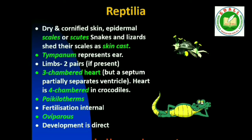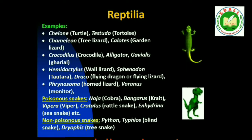Class Reptilia: The class name refers to their creeping or crawling mode of locomotion (Latin: repo/reptum = to creep or crawl). They are mostly terrestrial animals and their body is covered by dry and cornified skin — epidermal scales or scutes. They do not have external ear openings; tympanum represents the ear. Limbs, when present, are two pairs. Heart is usually three-chambered, but four-chambered in crocodiles. Reptiles are poikilotherms. Snakes and lizards shed their scales as skin cast. Sexes are separate; fertilization is internal. They are oviparous and development is direct. Examples: Chelone (turtle), Testudo (tortoise), Chameleon (tree lizard), Calotes (garden lizard), Crocodilus (crocodile), Alligator, Hemidactylus (wall lizard). Poisonous snakes: Naja (cobra), Bangarus (krait), Vipera (viper).